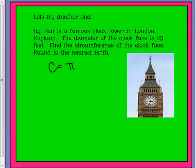In this one, I'm going to use pi times diameter because we know the clock face's diameter is 23 feet. Diameter is 23 feet, and they want us to find the circumference.